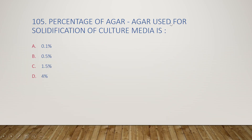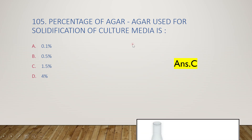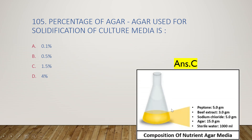Next question: the percentage of agar-agar used for the solidification of culture media is 0.1%, 0.5%, 1.5%, or 4%? The right answer is option C, 1.5%. The normal nutrient agar media composition includes peptone, beef extract, sodium chloride, agar, and sterile water.